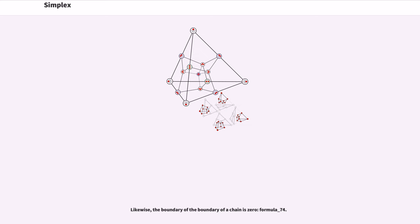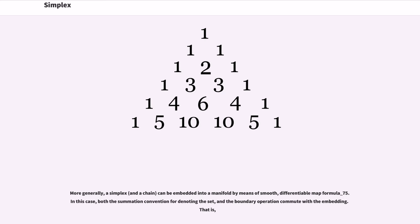Likewise, the boundary of the boundary of a chain is zero. More generally, a simplex can be embedded into a manifold by means of a smooth, differentiable map. In this case, both the summation convention for denoting the set, and the boundary operation commute with the embedding.